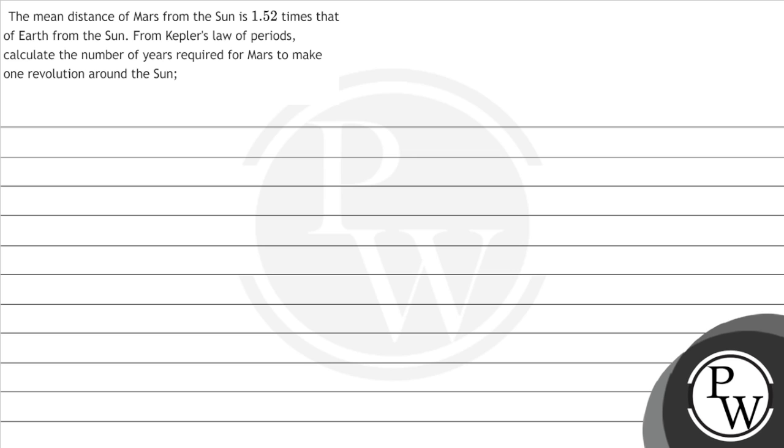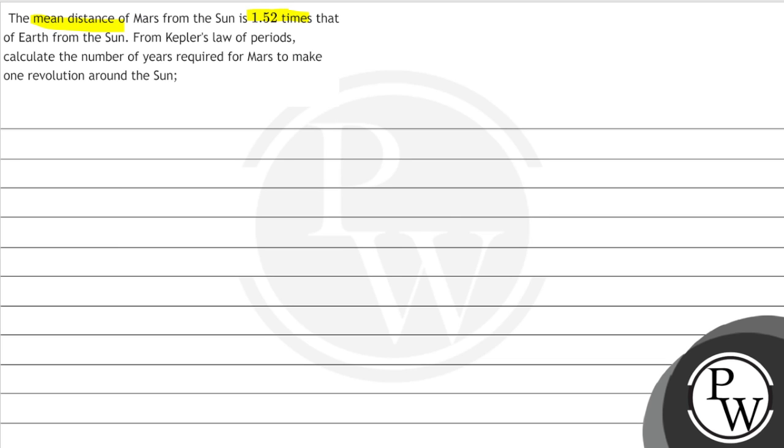Hello, let's read the question. The question says the mean distance of Mars from sun is 1.52 times that of Earth from the sun. From Kepler's law of periods, calculate the number of years required for Mars to make one revolution around the sun.